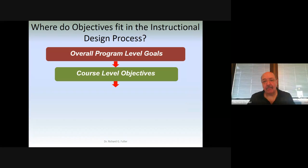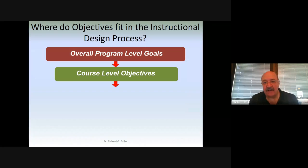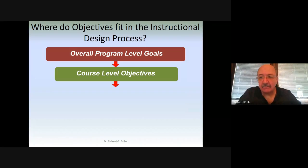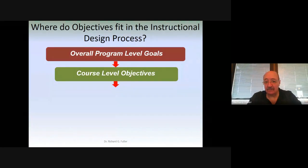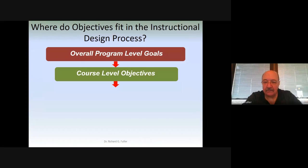The second thing you do is break those down and establish course-level objectives. If the program-level goals are the 10,000-foot view, you move down to the 5,000-foot view — each one of your courses will address some of these program-level goals. You list your program goals down one side of a spreadsheet and the courses along the top, putting checks as to which course addresses which goals. You may have some redundancy or overlap, and that's not a bad thing.